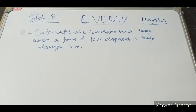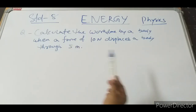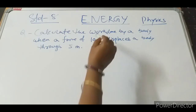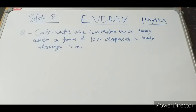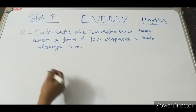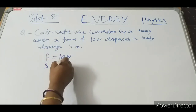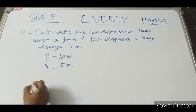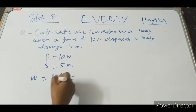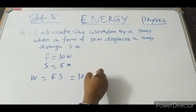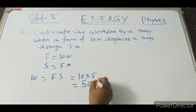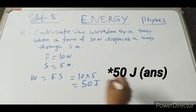Let us solve one numerical. Calculate the work done by a body when a force of 10 Newton displaces a body through 5 meter. Data given: F equal to 10 Newton, S equal to 5 meter. As we know, W equal to Fs, so W equal to 10 into 5, which gives 50 Joule. Work done by the body will be 50 Joule.